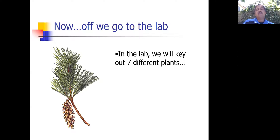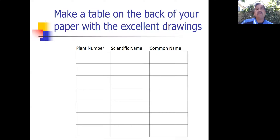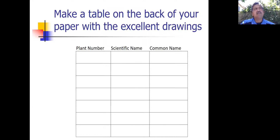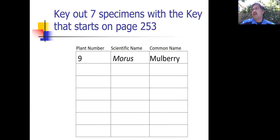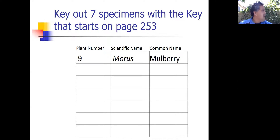The second part of the lab is you're going to key out seven different plants. We're going to use a key that says at the very top it's for Eastern United States trees. But many of those trees, as I said earlier, are transplanted from the East Coast, so we can totally use our Eastern United States key successfully here on the West Coast. We need a table where you're going to put the plant number, the scientific name, and the common name. In the laboratory I have specimens mounted on large pieces of paper — we call those herbarium specimens. Those of you in the in-class lab will see them in laboratory. If you're doing this lab virtually, you have plants all around you.